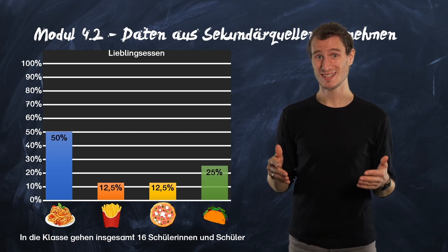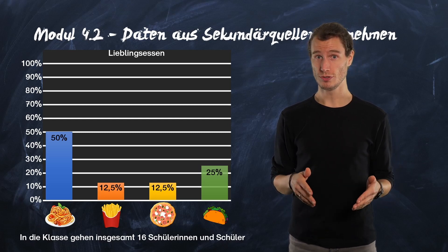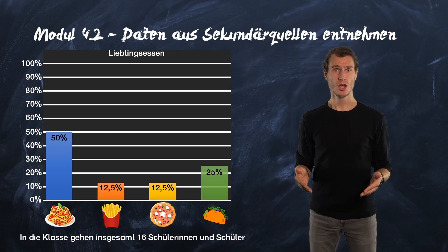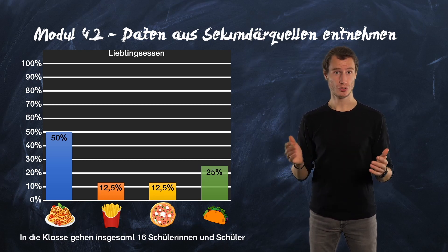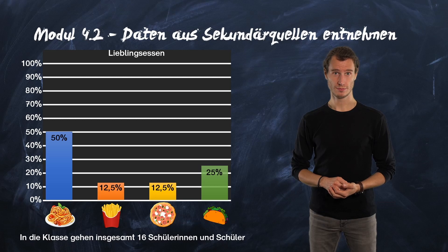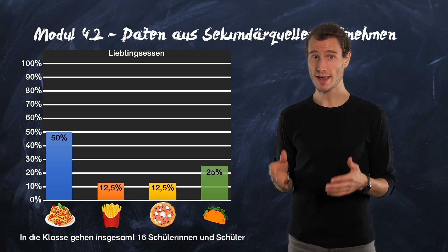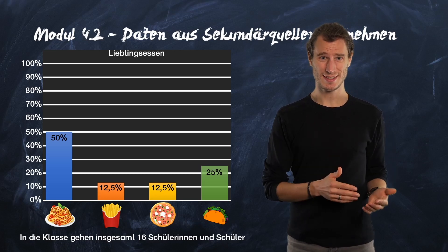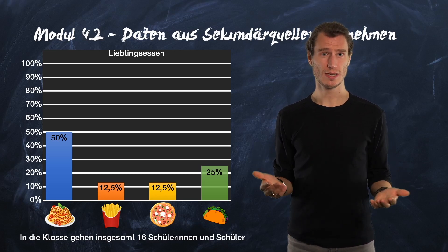Below the diagram it is written that the class consists of 16 students. Now we can calculate how many students actually like döner best. We simply calculate what 25% of 16 means, and then we know how many students listed döner as their favorite.